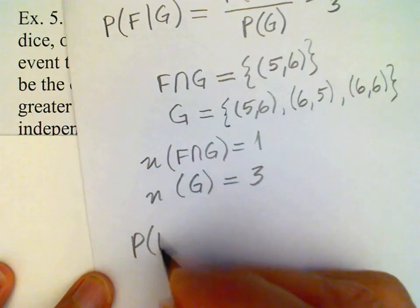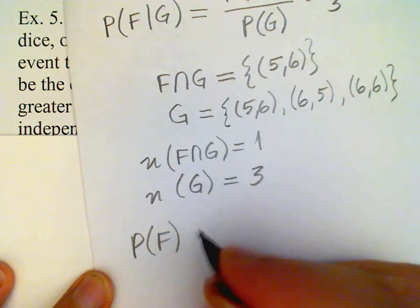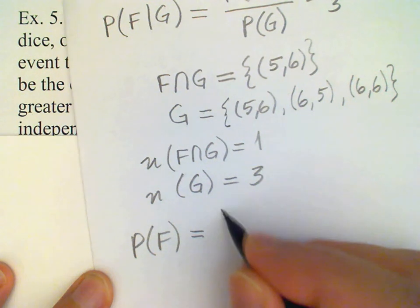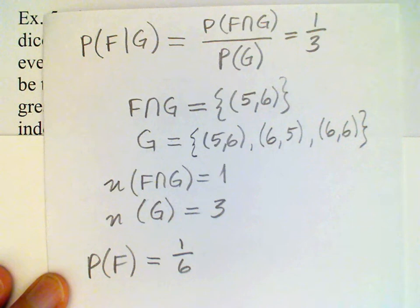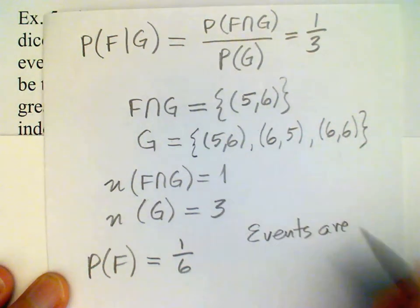On the other hand, the unconditioned probability of F — the probability of getting a five on the red die without reference to anything else — is clearly one-sixth, since there are six sides to a die. We see that the conditional probability one-third and the unconditioned probability one-sixth are not the same, so therefore the events are dependent.